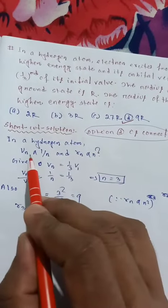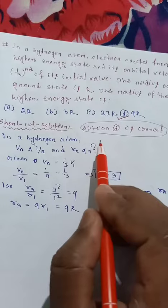In a hydrogen atom, the velocity is inversely proportional to N, and the radius is directly proportional to N.